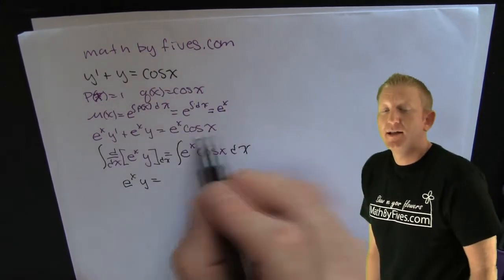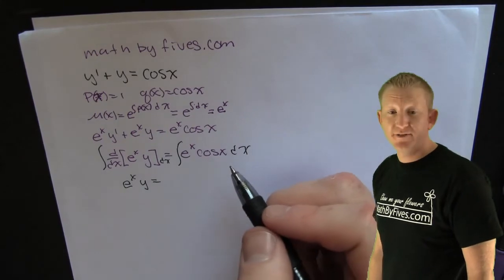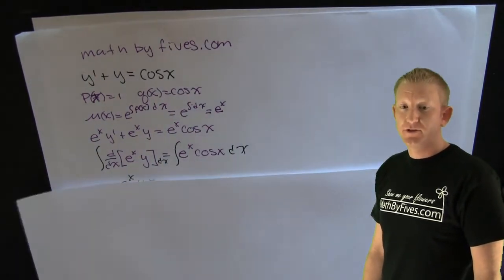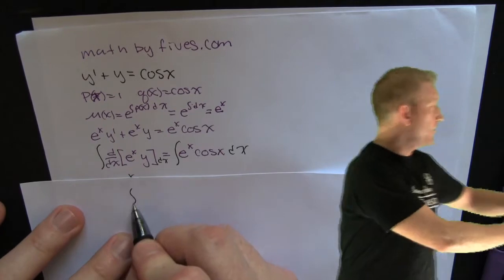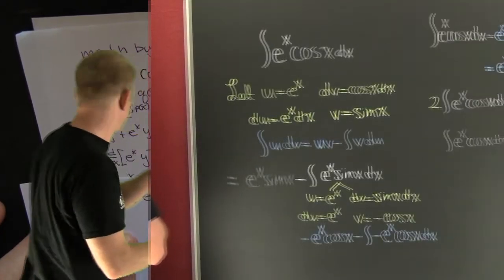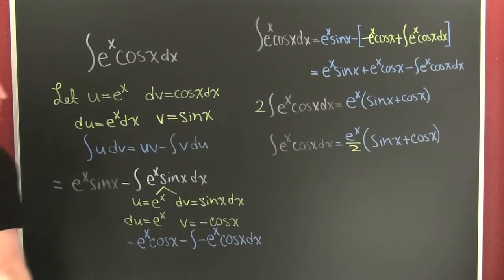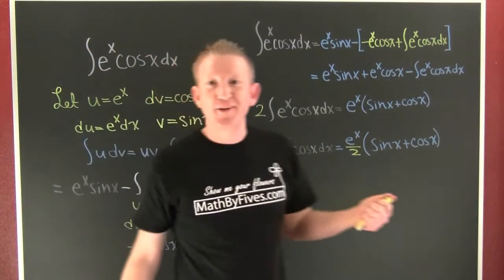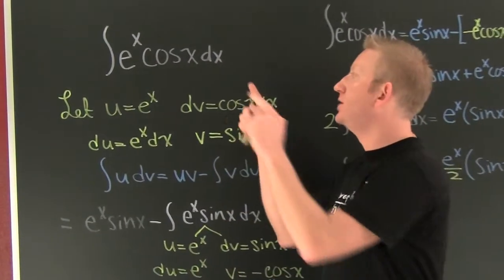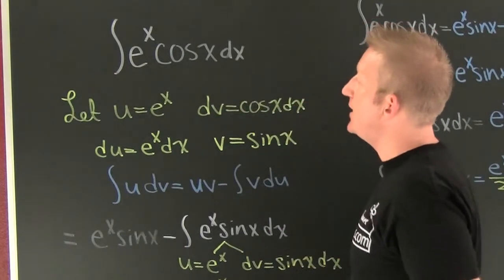And then on the right, we're going to have e to the x cosine x. Integrating both sides. On the left side, when we integrate the derivative, we have the function. Let me show you how to integrate that e to the x cosine x.